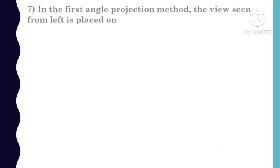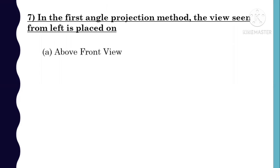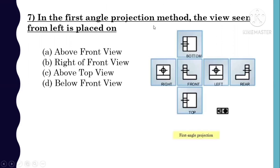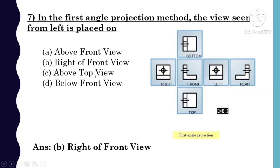MCQ 7: In the first angle projection method, the view seen from the left is placed on — options: A) above front view, B) below front view. The left-hand side view is placed on the right side of the front view. So option B, right of front view, is correct.